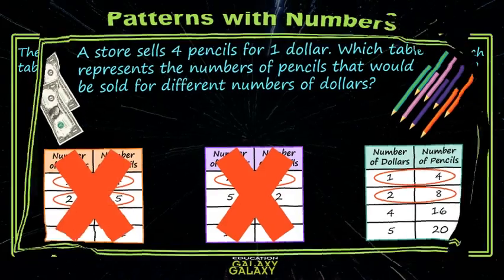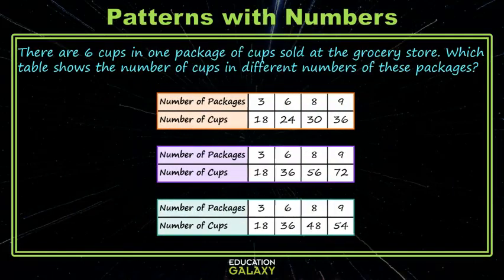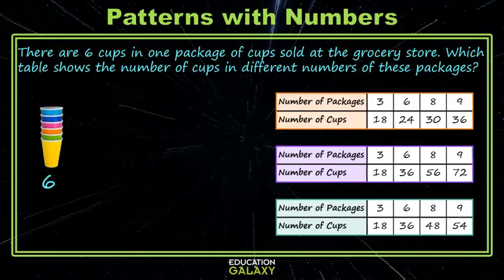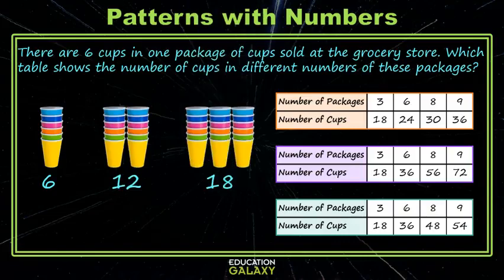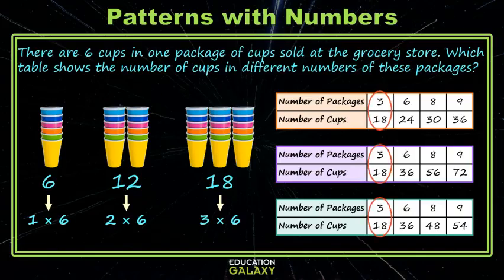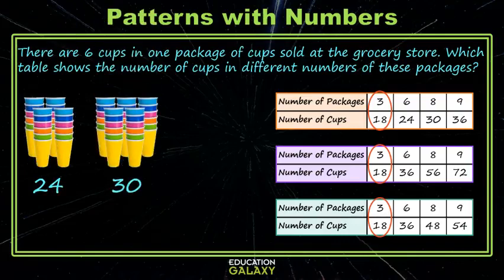One last example. There are six cups in one package of cups at the store, and we want to match the table with the number of cups for different numbers of packages. If I bought one package, that's six cups. Two packages would be two groups of six, or twelve cups. Three packages — three groups of six — gives 18 cups. You might recognize that as skip counting, repeated addition, or multiplication. So in our table, three packages should show 18 cups. Let's keep going to see what happens with four groups, five groups, and six groups.